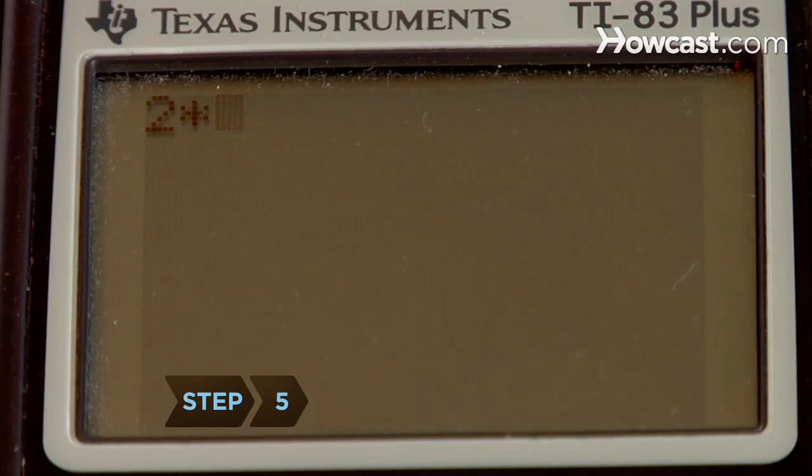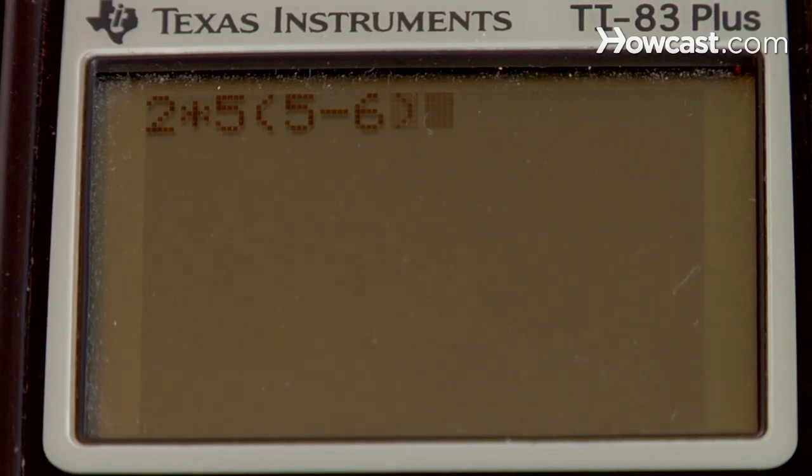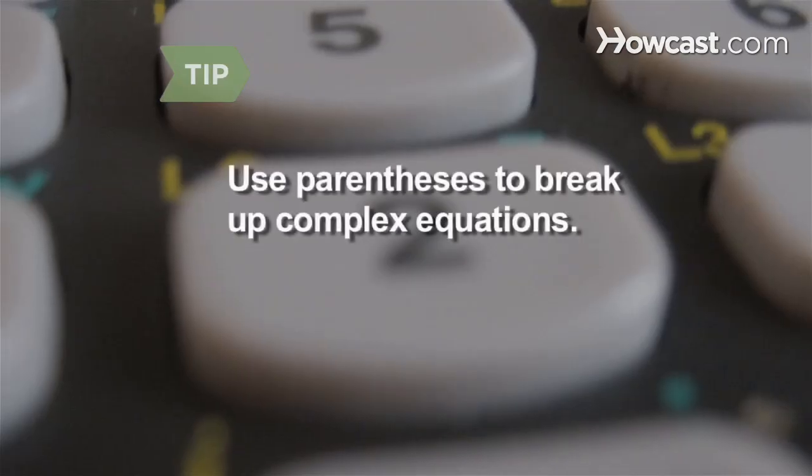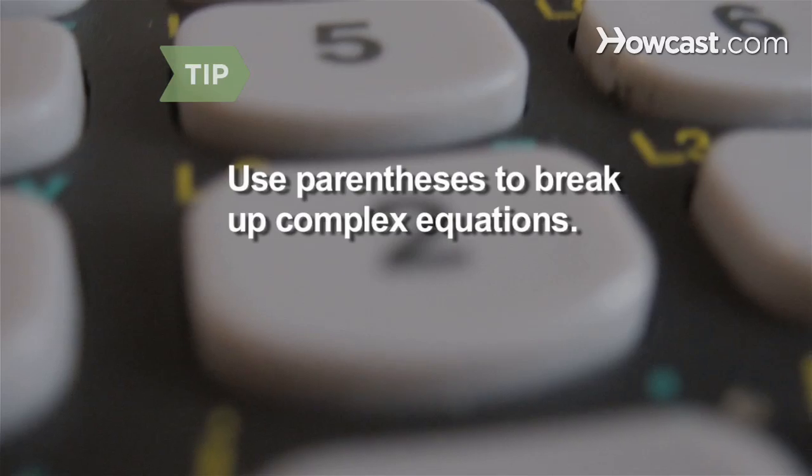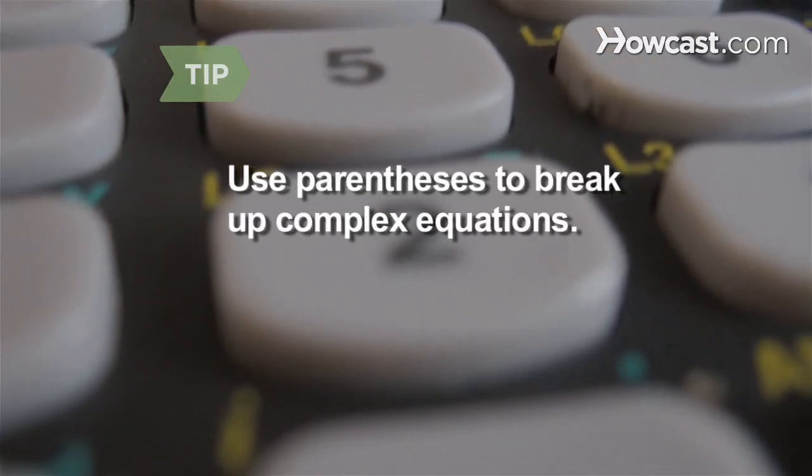Step 5: Type equations on the main screen the way they would look if you were writing them, and press ENTER to display the answer. Follow the order of operations when entering equations. Use parentheses to break up the equation in the order each part should be solved. Operations inside parentheses are completed first.